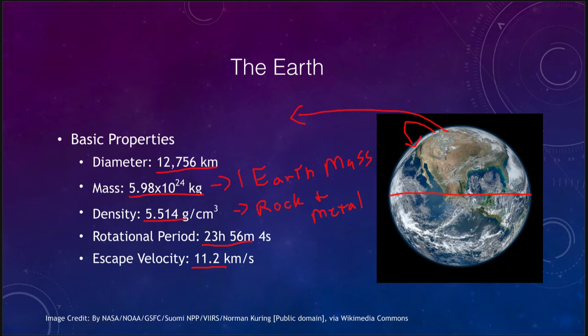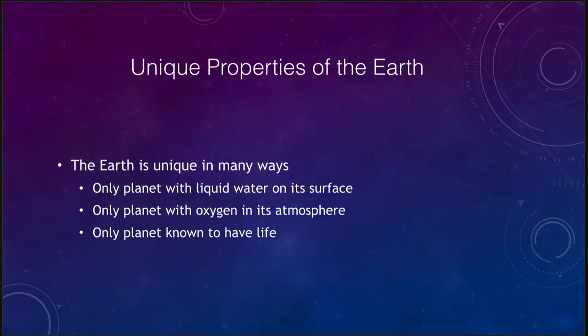Now let's look at some of the unique properties that the Earth has as well. The Earth is unique in many ways. It has several different things, including the only planet with liquid water on its surface. Now Mars has had liquid water in the past, so there is evidence that other objects have had liquid water on them. But Mars has no current liquid water, and anything that it does is really not water in the sense that we are used to. But we do see evidence that Mars had liquid water in the past.